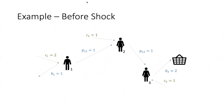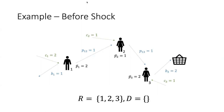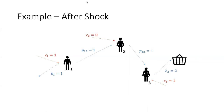Coming back to the example we saw in the beginning: everyone is able to serve their payments and all nodes are solvent. By computing the equilibrium payment, we see that node one can pay two, node two can pay one, and node three can pay two. Therefore the set of solvent nodes is {1, 2, 3} and the set of default nodes is empty.